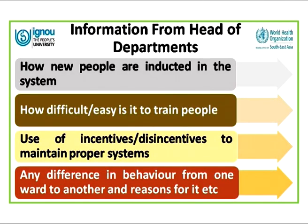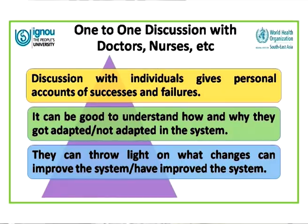We then need to go to the various heads of departments. Information required from them includes how new people are inducted into the system, the criteria and procedure for induction, how difficult or easy it is to train people, whether incentives or disincentives are used to maintain proper systems, and whether there are differences in behaviour between wards — related to waste management, segregation, collection, disposal, and spill management.